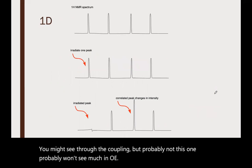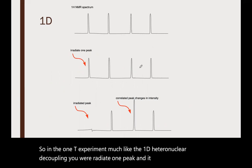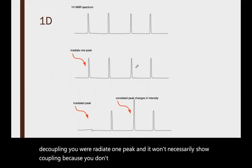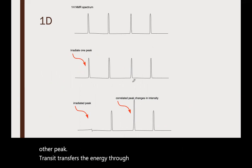In the 1D experiment, much like 1D heteronuclear decoupling, you irradiate one peak and it won't necessarily show coupling because you don't see the coupling in the proton NMR. The energy transfers through space to the other proton and that peak grows.